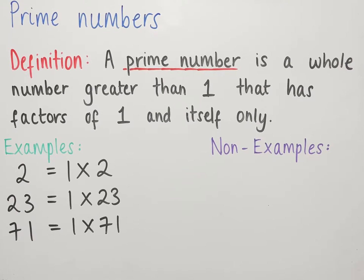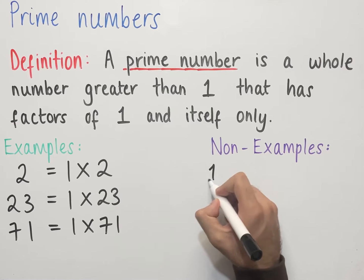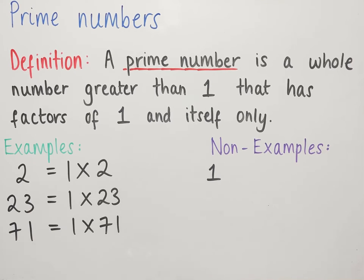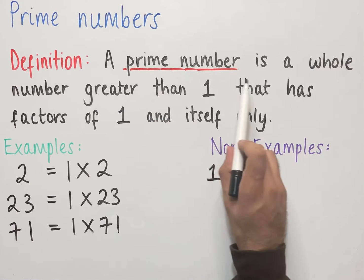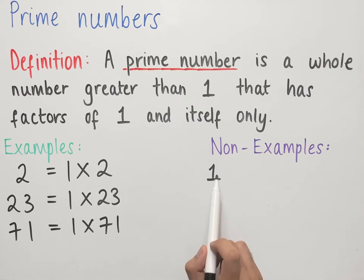Now let's look at some non-examples. The first one that often leads to a common misconception is the number 1. The number 1 is not a prime number since it's not greater than 1 — 1 is equal to 1. The conditions for a prime number require a whole number that is greater than 1, and 1 is not greater than itself.